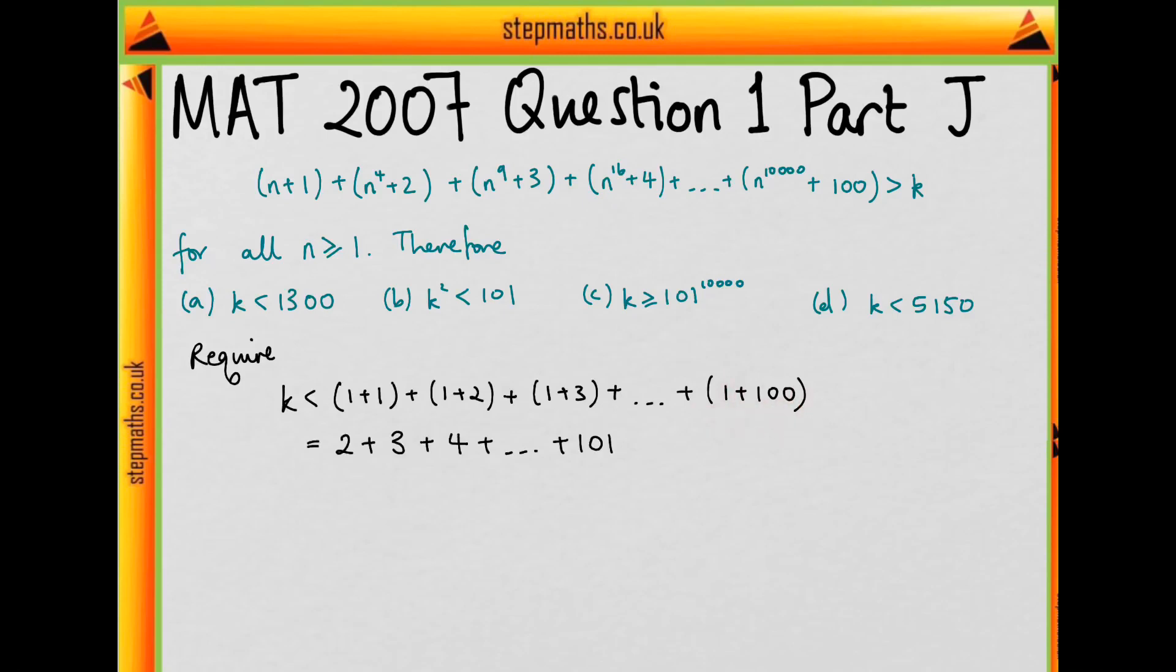which is just the sum of all the natural numbers from 2 up to 101. And we see that we've got an arithmetic progression here, starting at 2 and going up 1 each time. And so we can just use the formula for the sum of an arithmetic series here.